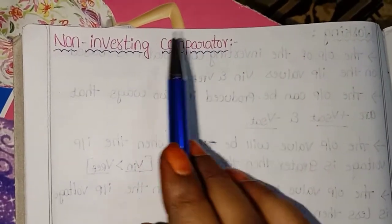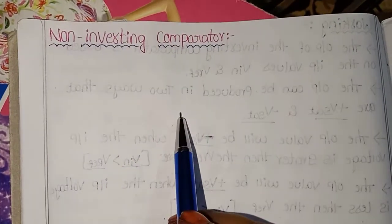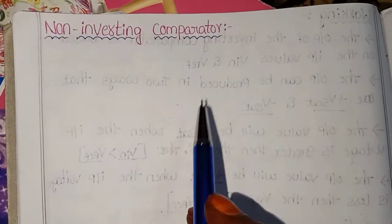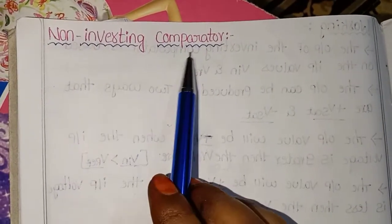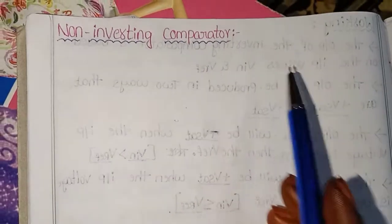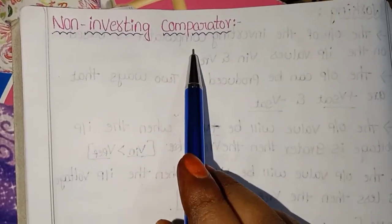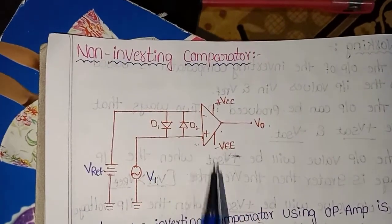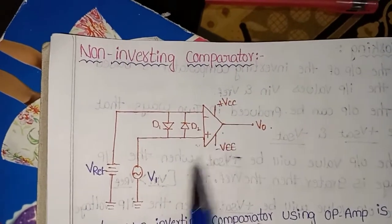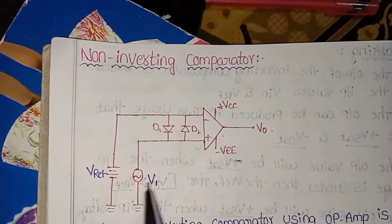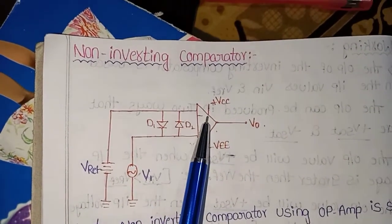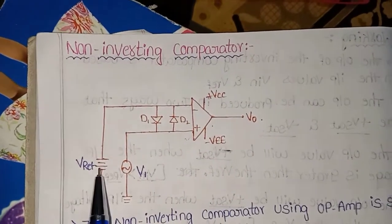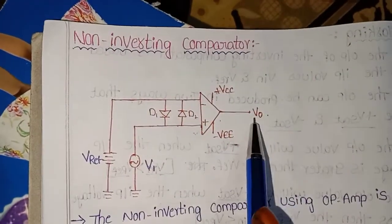The input is applied to the non-inverting terminal — input voltage — and the reference voltage is applied to the inverting terminal, producing the output of the non-inverting comparator. I will show you the circuit diagram. This is the non-inverting comparator circuit diagram. Input voltage V1 is applied to the non-inverting terminal, and the reference voltage V-reference is applied to the inverting terminal. The output is V0.